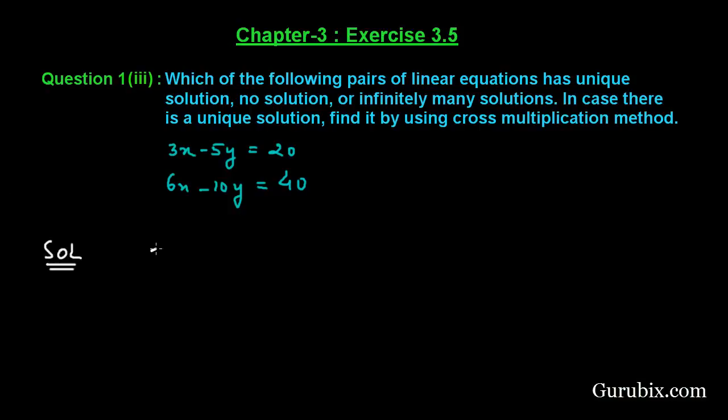So let us solve this question. First of all, we shall collect the given equations. That is 3x minus 5y equals 20, this is our equation number one. And the second equation is 6x minus 10y equals 40, this is our equation number two.